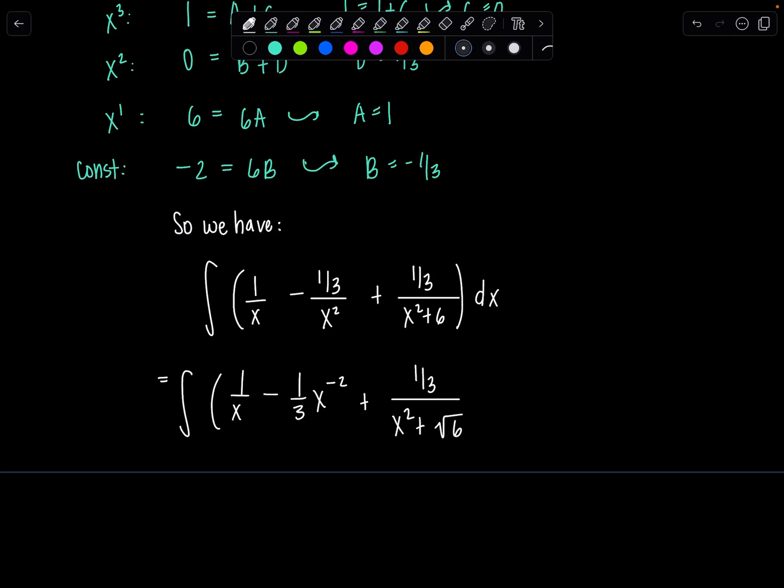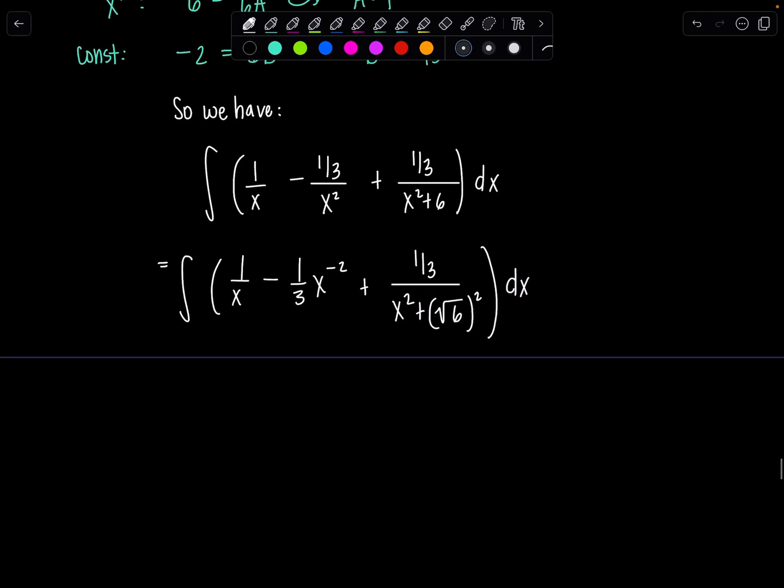What about this one-third over x squared plus 6? I'm going to write it as rad 6 squared, and you might be thinking, what in the world are you doing, Professor V? Well, this one does not involve natural log. I'm just going to jog your memory in case you forgot. Integral 1 over x squared plus a squared dx is 1 over a tan inverse x over a plus c.